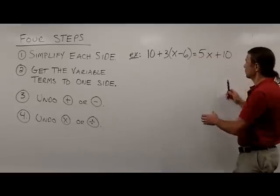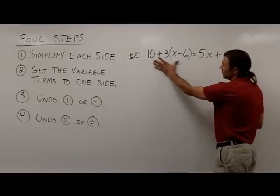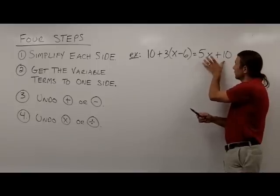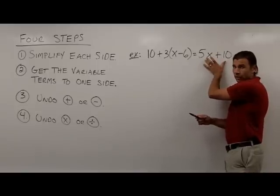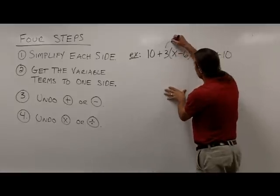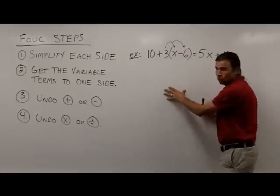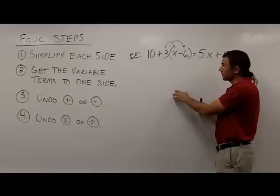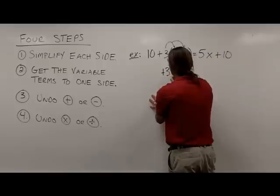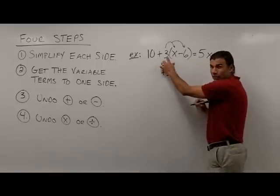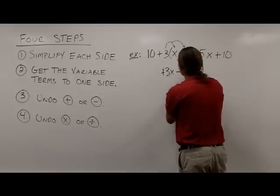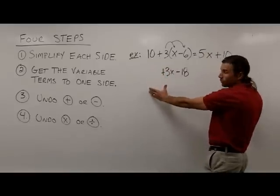Taking a look at my equation, I have a left side and a right side. Notice the right side is simplified — 5x plus 10 are unlike terms, so I cannot simplify the right side. However, the left side can be simplified. I'm going to start by distributing the 3 on the left side. A positive 3 times a positive x gives me plus 3x, and a positive 3 times a negative 6 gives me negative 18. Now I'll bring down the rest of the problem.